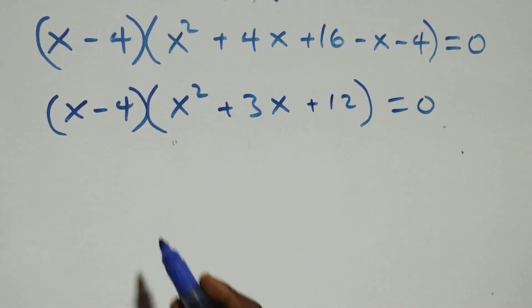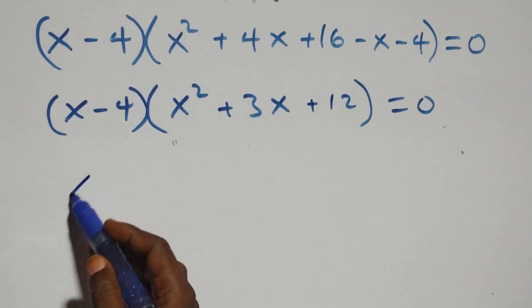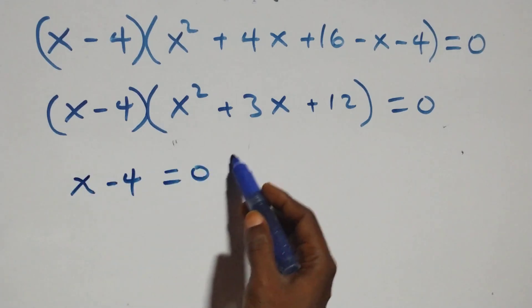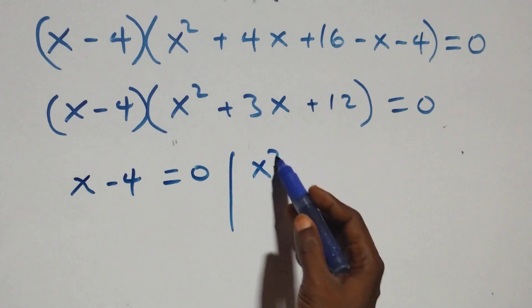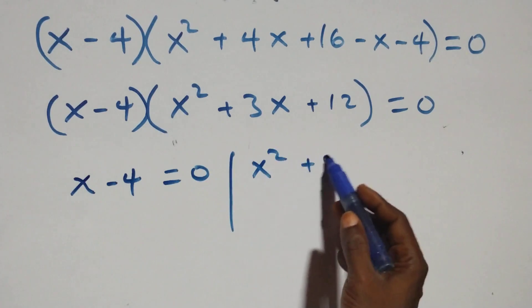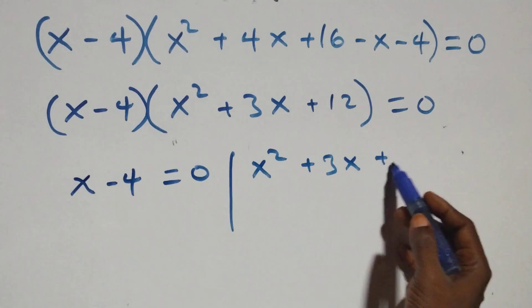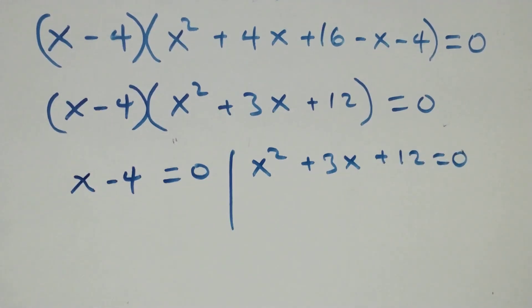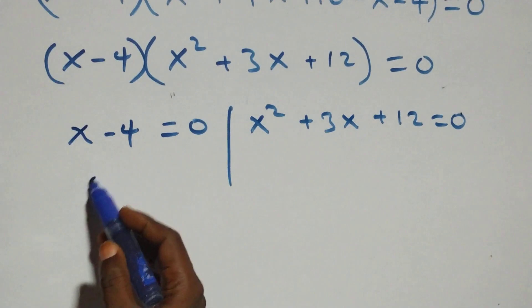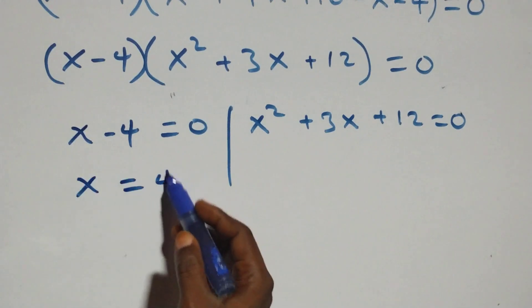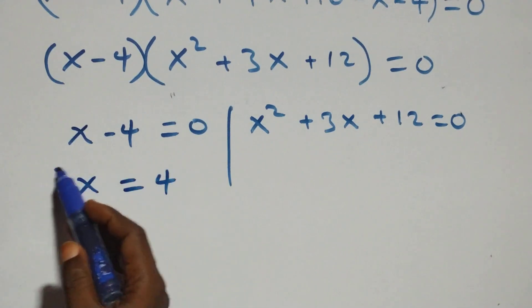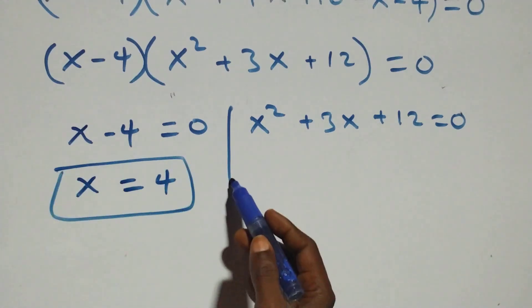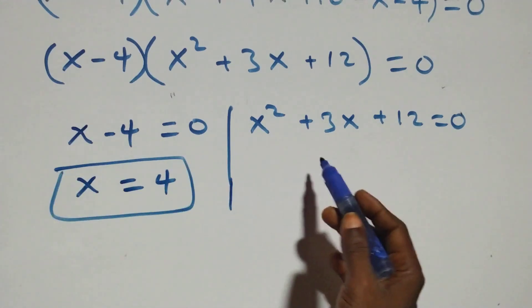We now have two possible cases. The first: x minus 4 equals to 0, which gives x equals to 4 — this is the real solution. The second case is the quadratic x² + 3x + 12 equals to 0.